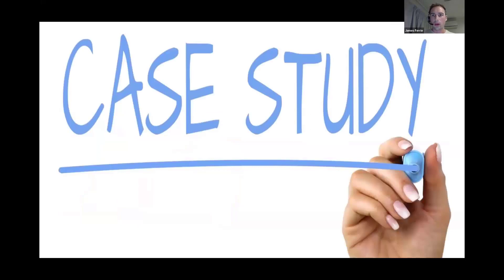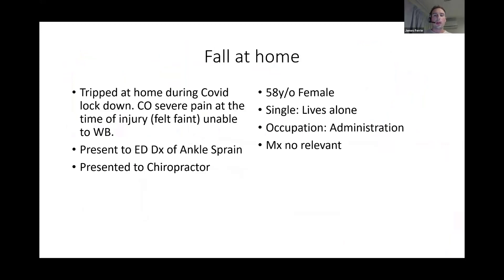The first case study was a 58-year-old female patient. She lives alone, works in administration, no relevant medical history. She actually presented to her chiropractor complaining of a sore back, but several days before she had tripped at home during the COVID lockdown. She complained of quite severe pain, felt faint, and was unable to weight bear immediately after the injury. She presented to ED, was diagnosed with an ankle sprain, and a few days later that ED had an outbreak of COVID — which may have been one reason she was moved through quite quickly.